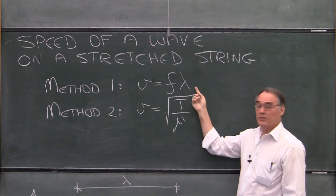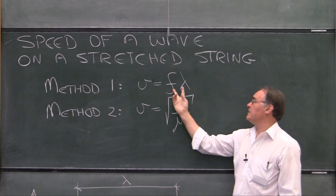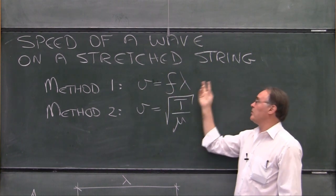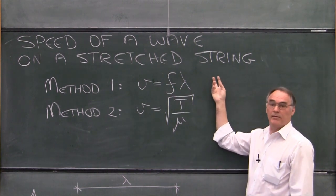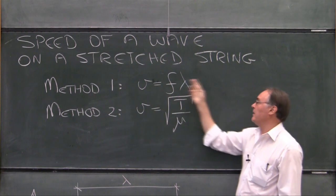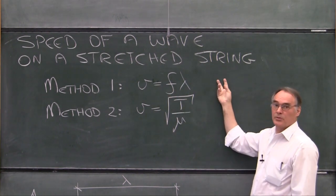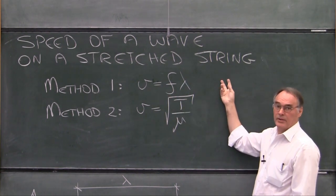In the first method, we're going to take a family of readings, a family of frequencies and wavelengths. And because we're going to have a family of frequencies and wavelengths, we're going to be able to calculate the speed and we'll be able to do a Type A evaluation of uncertainty.